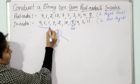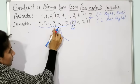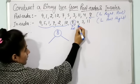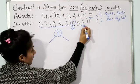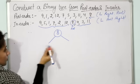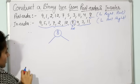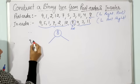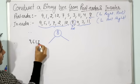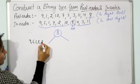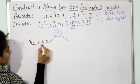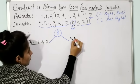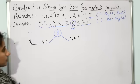All elements to the left of this root are elements of the left subtree, and the rest are elements of the right subtree. The elements of the left subtree are 9, 5, 1, 7, 2, and 12. The elements of the right subtree are 4, 3, and 11.